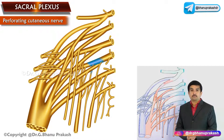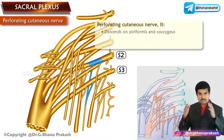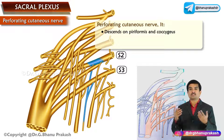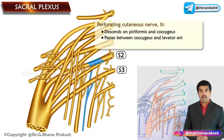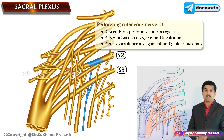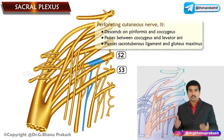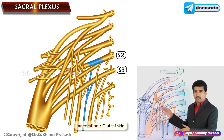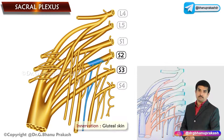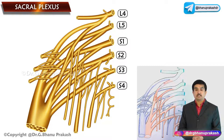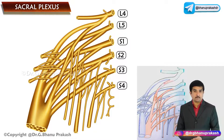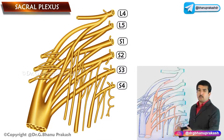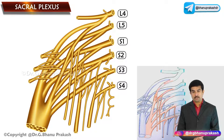The perforating cutaneous nerve is formed from dorsal divisions of S2 and S3. It descends on piriformis and coccygeus, passes between coccygeus and levator ani, then pierces the sacrotuberous ligament and gluteus maximus to supply the gluteal skin. This completes our discussion of the sacral plexus and the detailed gross anatomy of its individual branches.